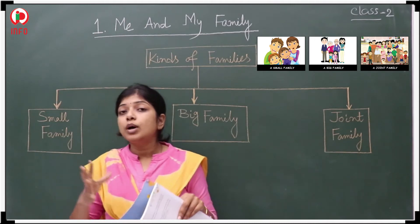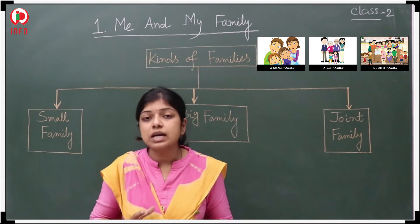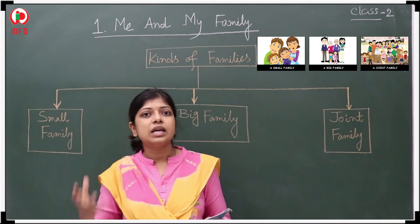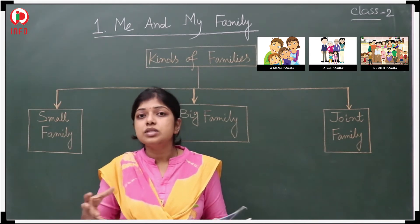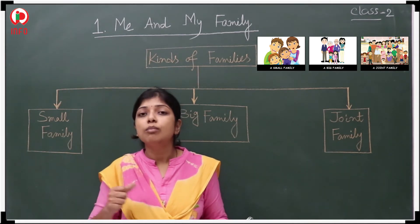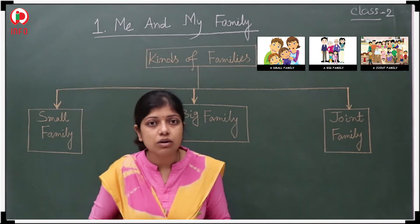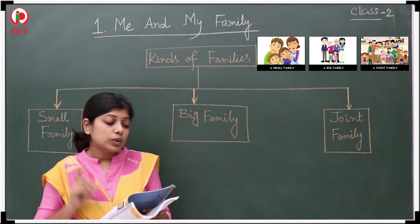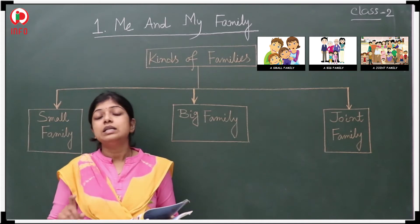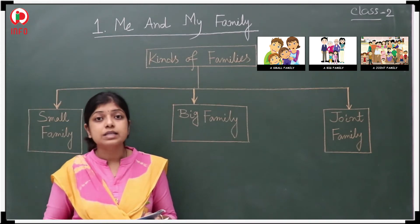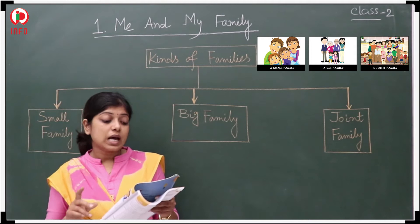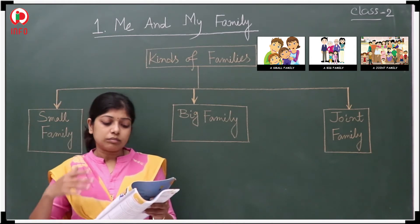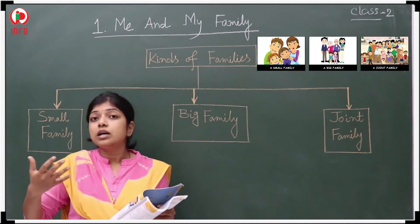Whenever the number of family members is less, everything that is distributed will be more in amount for each person. That is the main reason the nuclear family, or the small family, is a happy family. Which one is the happy family? The small family, because they are getting more comforts.